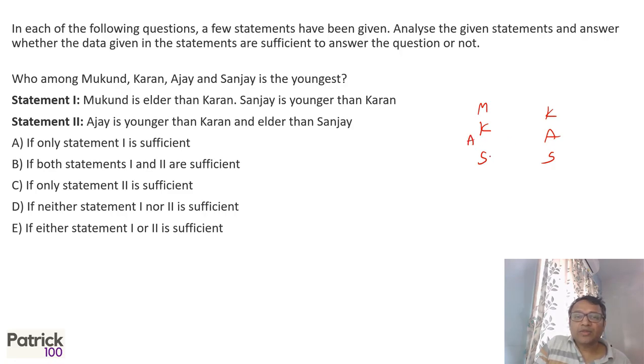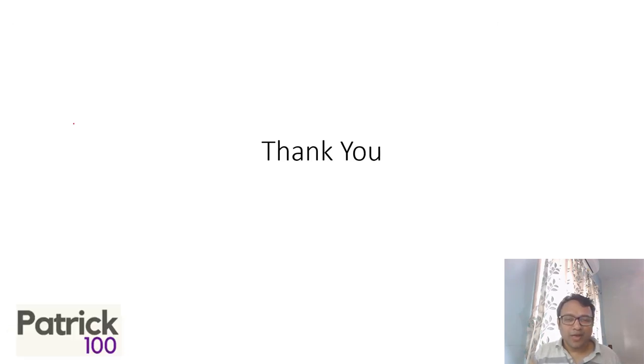But if I combine the two, you can make out Ajay is between Karan and Sanjay. The youngest will be Sanjay. So both statements one and two are sufficient, B option. Sometimes data sufficiency becomes quick to solve if it's easy, sometimes it takes time. Some of them are quick, so you have to look at how it is and then decide whether to solve or not. I hope this is clear. Thank you.